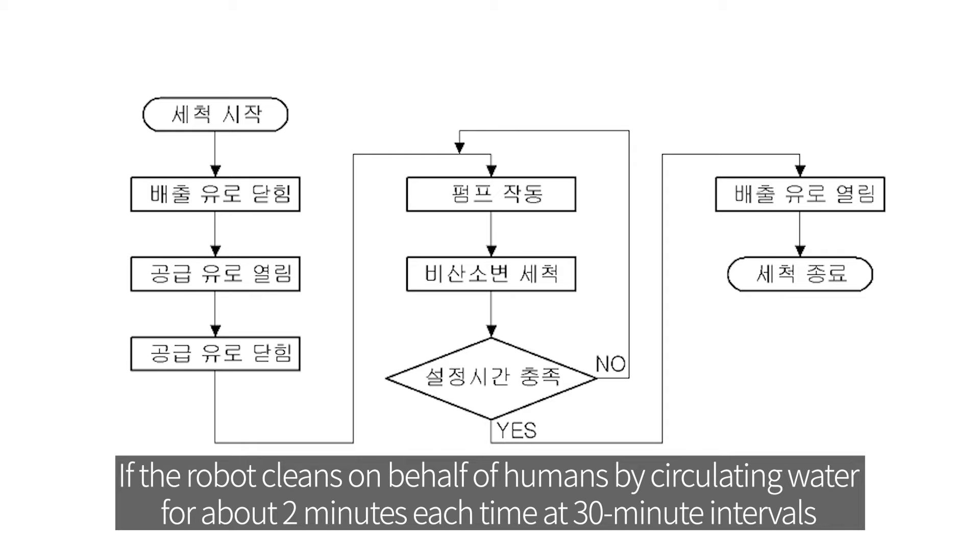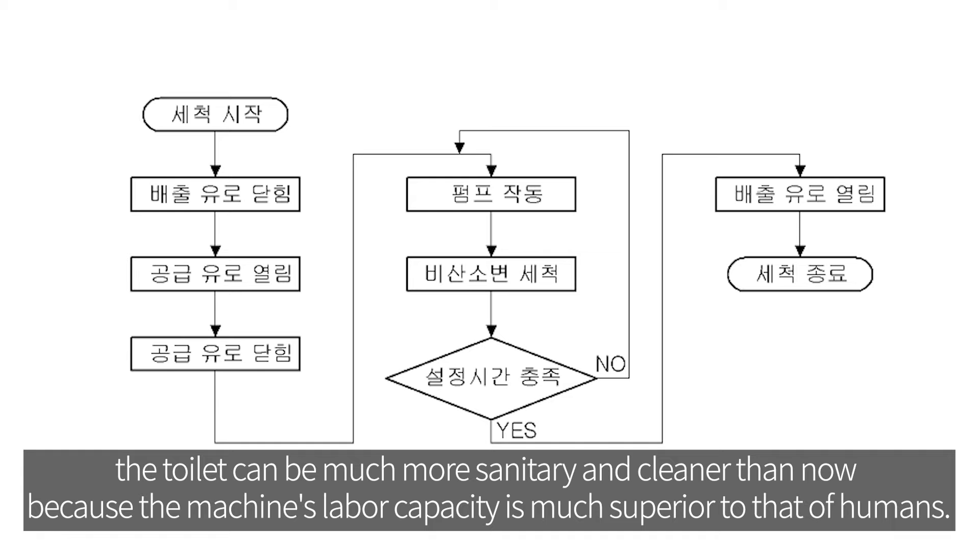If the robot cleans on behalf of humans by circulating water for about two minutes each time at 30-minute intervals, the toilet can be much more sanitary and cleaner than now because the machine's labor capacity is much superior to that of humans.